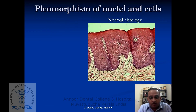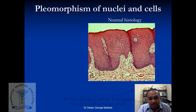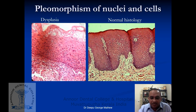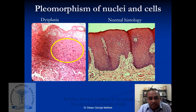Pleomorphism means variation in the size and shape of the cell. In normal buccal mucosa histology, the cells and nuclei in the spinous layer have almost uniform size and shape. In a dysplastic tissue — the yellow circle marked area — you can see variation in the size and shape of the cells and the nuclei. This variation in size and shape of cells and nuclei is known as pleomorphism, and it is an important atypical feature seen with dysplasia.